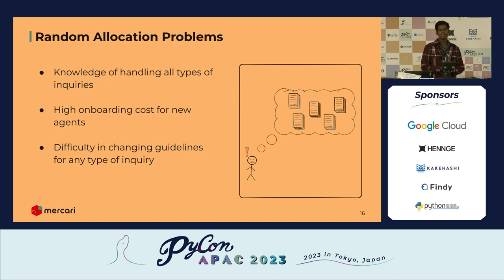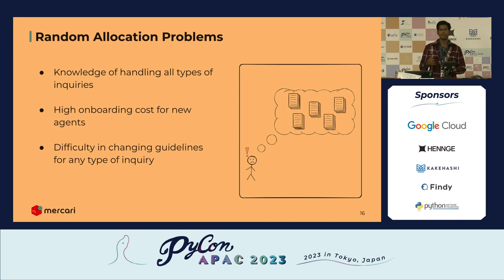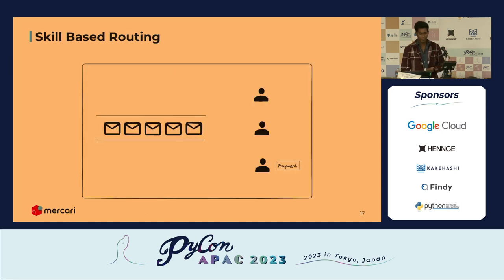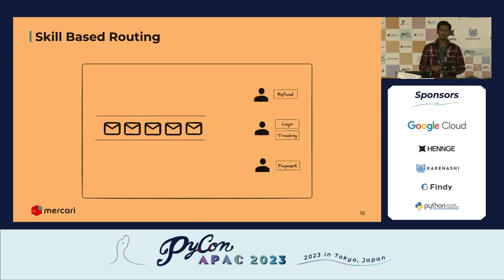With random allocation, agents need to have knowledge about how to handle all categories of inquiries. When a new agent joins the team, they have to learn about each procedure before starting work, making onboarding cost high. Also, if you want to change guidelines for a specific category, you need to transmit that information to every single agent. So to solve these issues, instead of having agents know about everything, we make specializations — each called a skill — and agents can have one or more specializations.